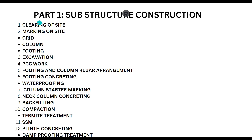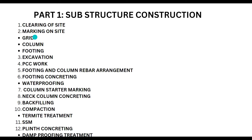The very first step is clearing of site. If you have an existing structure or overgrown trees and grass, you have to clear all of it out. After clearing is done, the next step is marking on site — you are going to mark grids, columns, and footings. We have to do our excavation work, and you can't start excavation without a reference point. So you mark your grids, and based on grids you mark your columns and footing sizes on site.